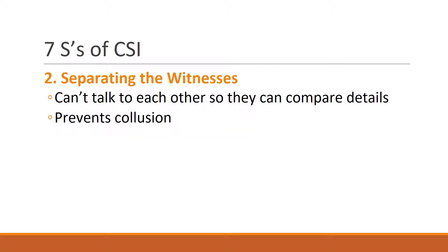The second S is to separate the witnesses. You don't want witnesses talking to each other because you don't want them comparing details — this is called collusion. Collusion is also a key term in academics, such as when one class tells another class what was on a test. It's an important term not just in forensics but also in academics.